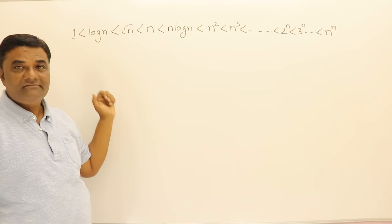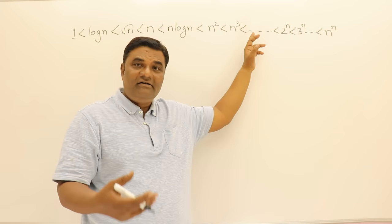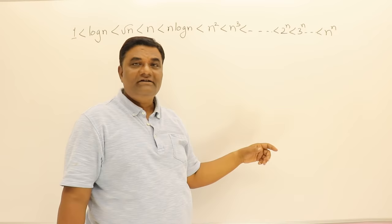So n³ then goes on n⁴, n⁵, or up to n¹⁰⁰ also, that is less than 2^n and 2^n is less than 3^n. That's how they are written in the increasing order of their weightage.